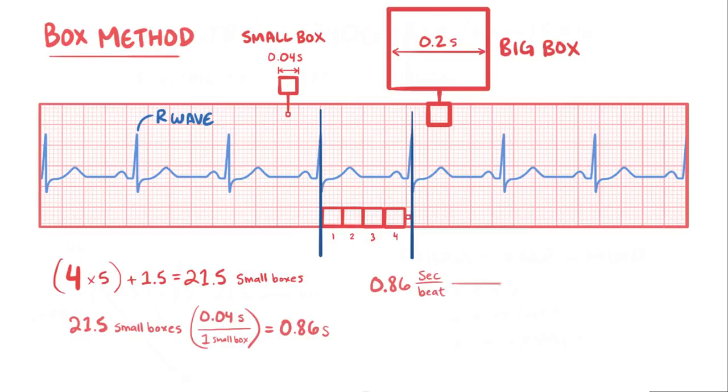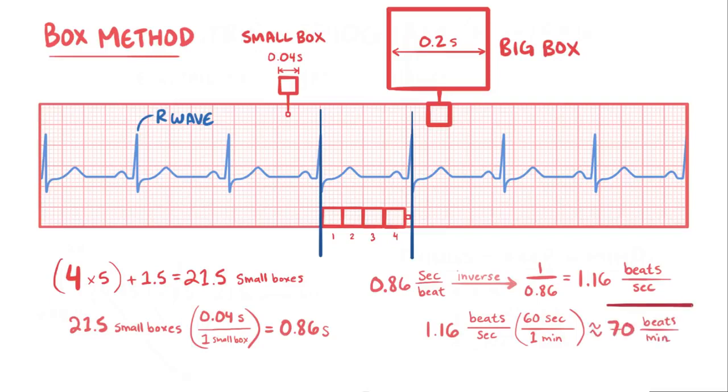Now, to get something a little more meaningful, we can take the inverse of that, which is 1 over 0.86 beats per second, or 1.16 beats per second. Now since there are 60 seconds in a minute, we can multiply this by 60 and end up with 70 beats per minute, which is the heart rate.